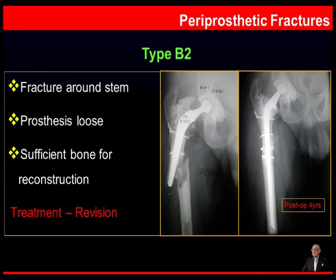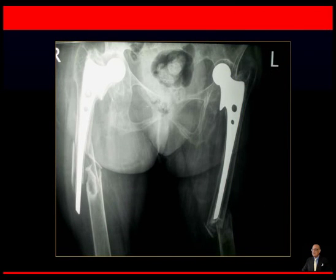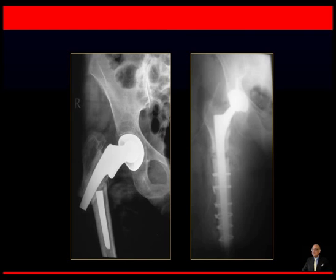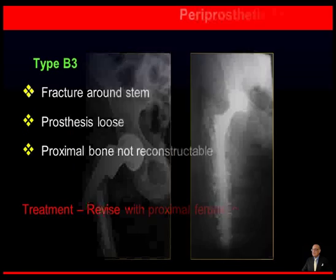Moving on to type B2 periprosthetic fractures — fractures around the stem where the prosthesis is obviously loose but there is sufficient bone for reconstruction. In these cases, revision is indicated. Here is an example of a B2 fracture with a 4-year post-operative follow-up showing an excellent outcome. Another patient with bilateral B2 fractures underwent complete revision of both the acetabular and femoral components — a long follow-up case with ankylosing spondylitis — and a 3-year follow-up showed an excellent outcome. Yet another B2 patient had the implant removed and substituted with a long uncemented stem with an excellent result.